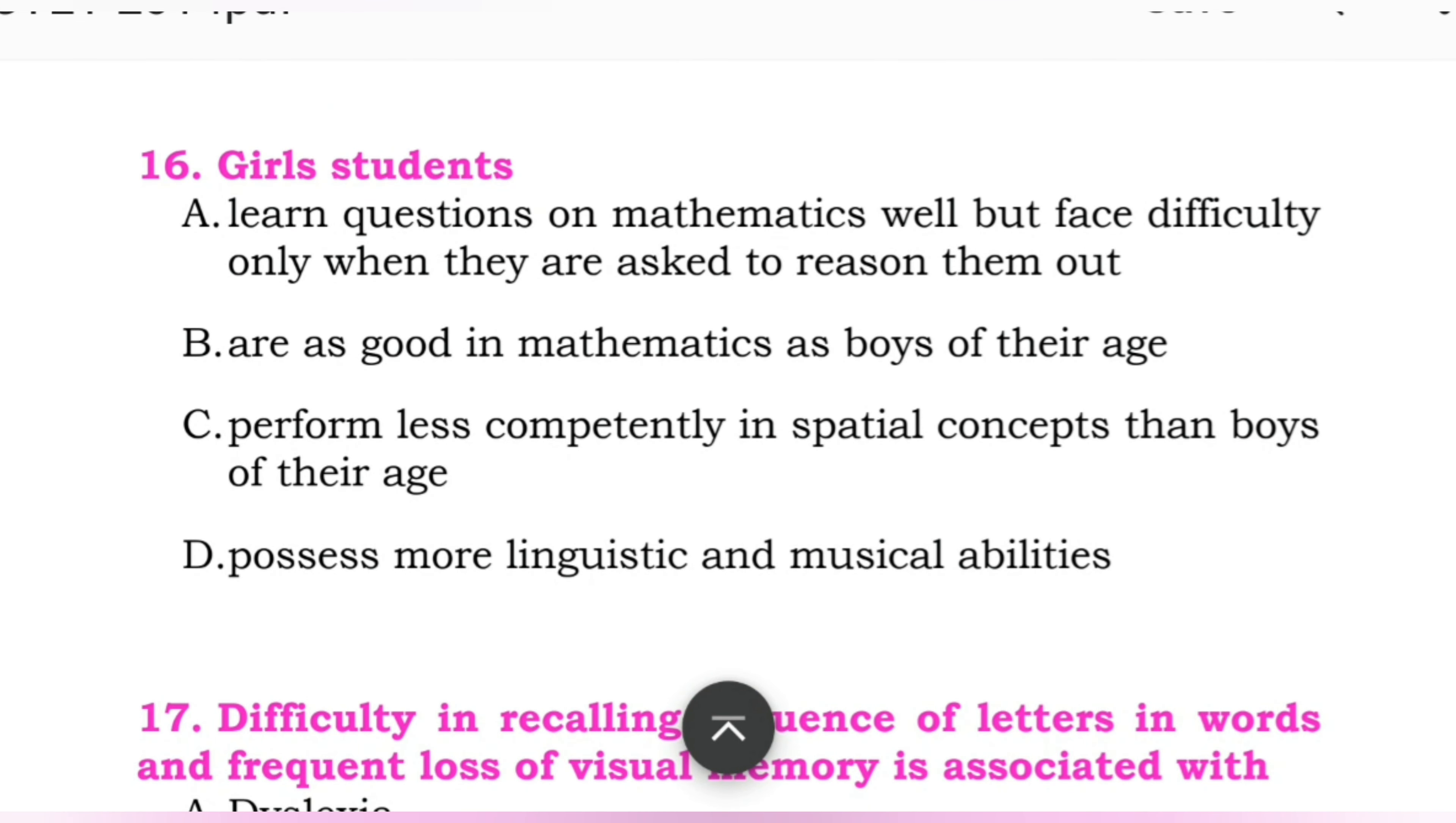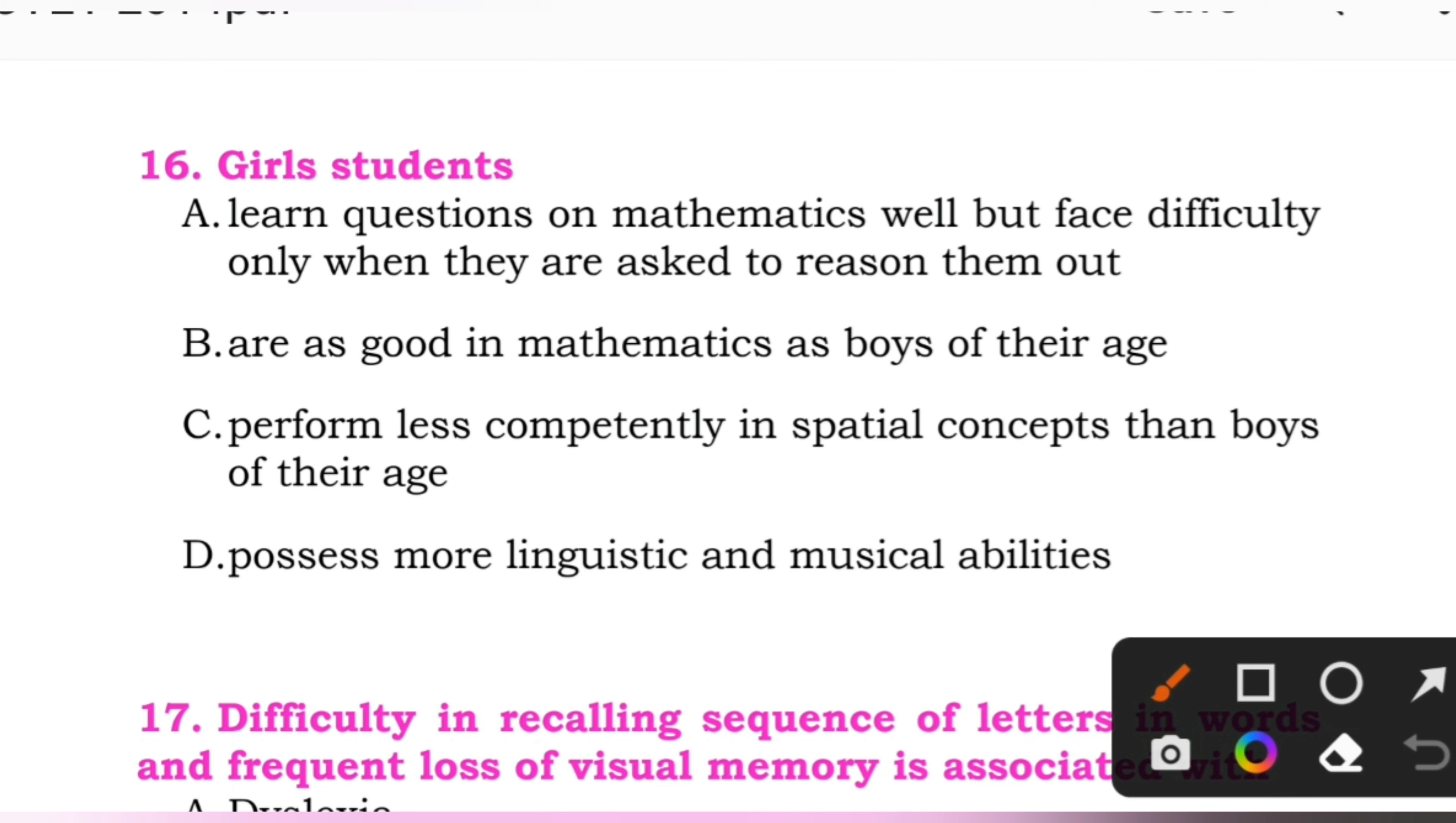Question number 16: Girl students. Options: A: learn questions on mathematics well but face difficulty only when they are asked to reason them out. B: are as good in mathematics as boys of their age. C: perform less competently in spatial concepts than boys of their age. D: possess more linguistic and musical abilities. Here the right answer is B, are as good in mathematics as boys of their age.